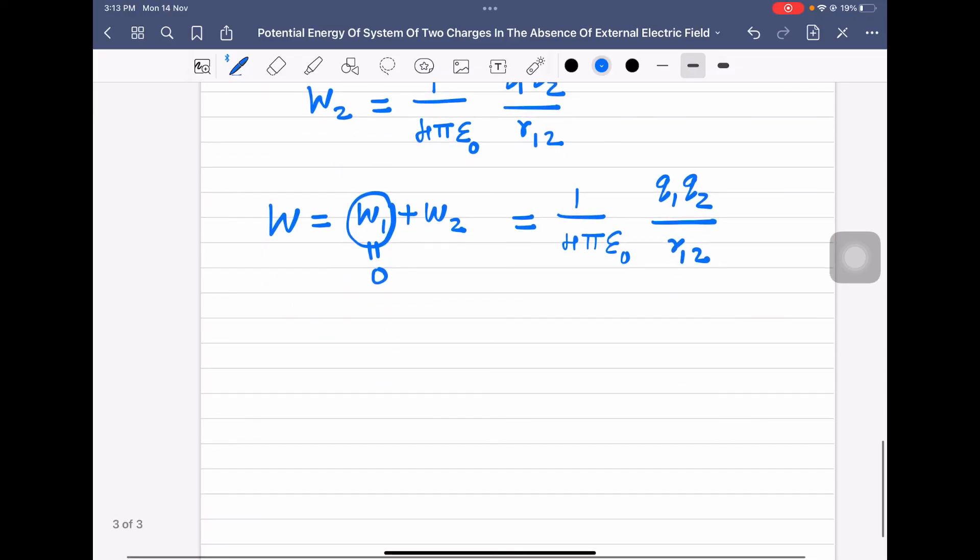So therefore, according to the definition, work done in assembling these two charges gives the potential energy of the system. Therefore, potential energy of the system of two particles is given by U equal to 1 by 4π epsilon 0 into Q1 Q2 divided by R12. Thank you very much.